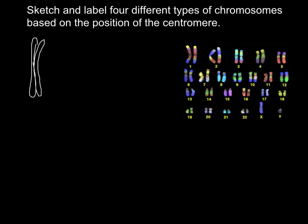These are two sister chromatids connected at the center. They have a centromere and this is the point of connection. Later they would be pulled to different parts of the cell during the process of meiosis. Such a position in the middle is called metacentric.